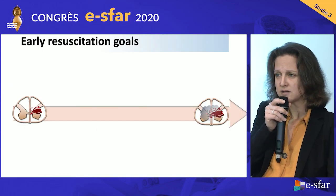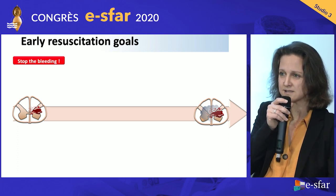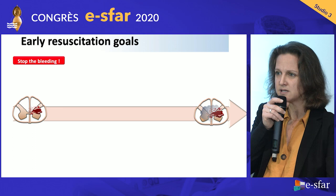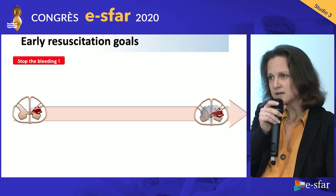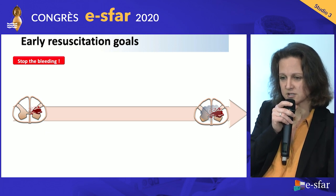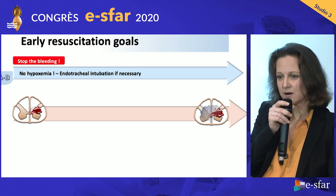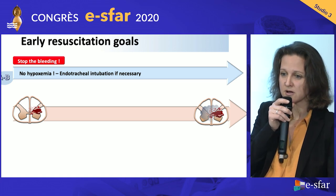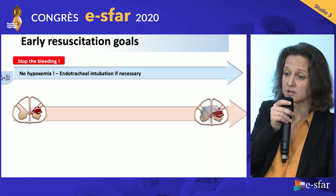When it comes to early resuscitation goals: first of all, address the life-threatening injuries first — stop the bleeding from external and internal bleeding with a pelvic belt, for example, following European and French guidelines on hemorrhagic shock. Then, when it comes to A-B — airway and breathing — you should avoid hypoxemia to avoid secondary insults. Some patients need endotracheal intubation; some patients don't need it from the beginning. At least you avoid hypoxemia by giving oxygen, either with invasive devices or not.